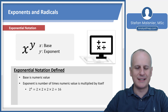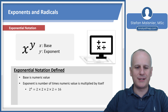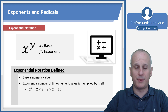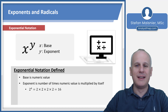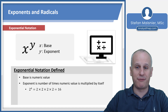For instance, 2 to the 4th means 2 times 2 times 2 times 2, because there are four 2s multiplied together. That gives us 2 times 2 is 4, times 2 is 8, times 2 is 16. Exponential growth comes from this idea that it just keeps getting bigger faster and faster.